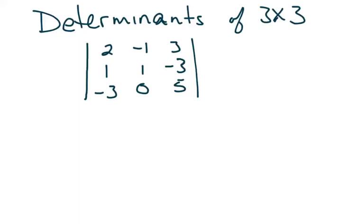This video is about finding the determinants of a 3x3 matrix and then applying it to Cramer's rule to solve systems of 3 equations with 3 variables. When we did 2x2 determinants in the previous video, it was pretty easy — you start at the upper left-hand corner, multiply numbers down the diagonal, then subtract the product of the diagonal going the opposite direction. Now it's going to be similar, but extended further because there are three values, so we'll have more than just one diagonal in each direction.